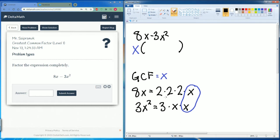So we start writing the GCF, then we put the parentheses. What's in the parentheses is what's left. So let's see what is left over from the 8x: 2 times 2 times 2, so that is 8. What is left over from the 3x squared: 3 times x, so we say 3x.